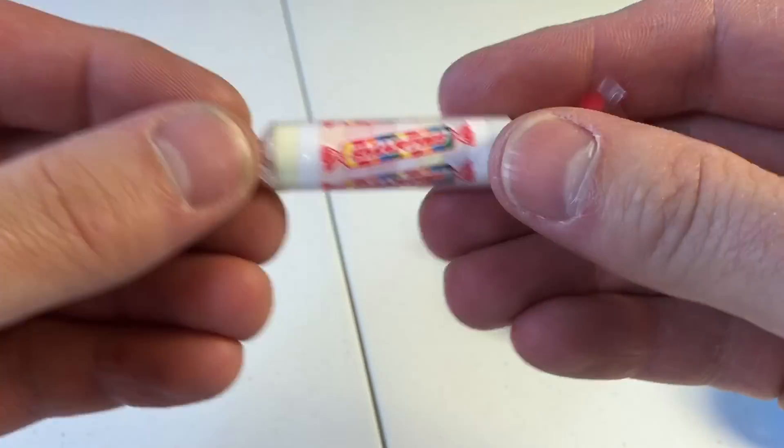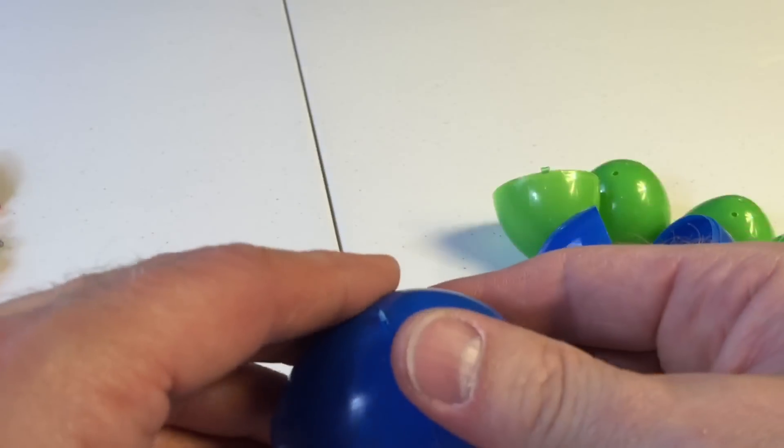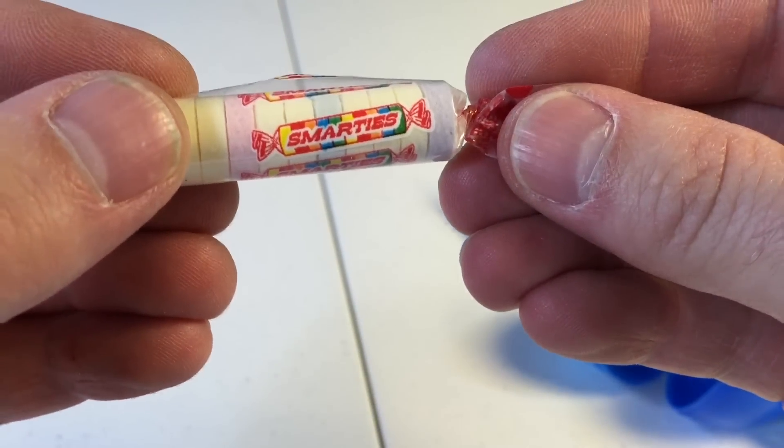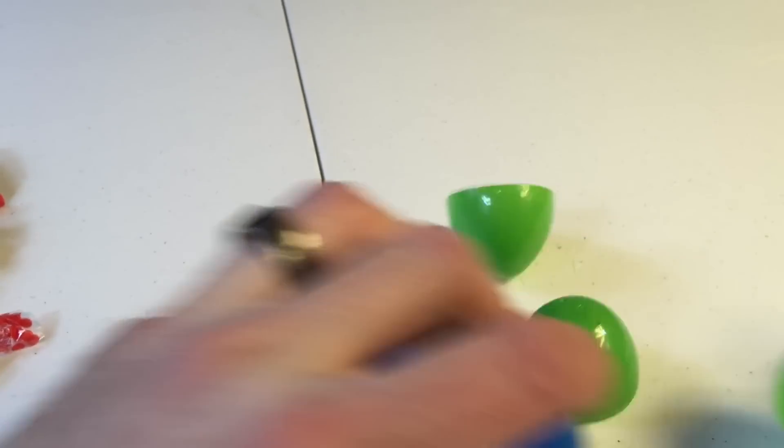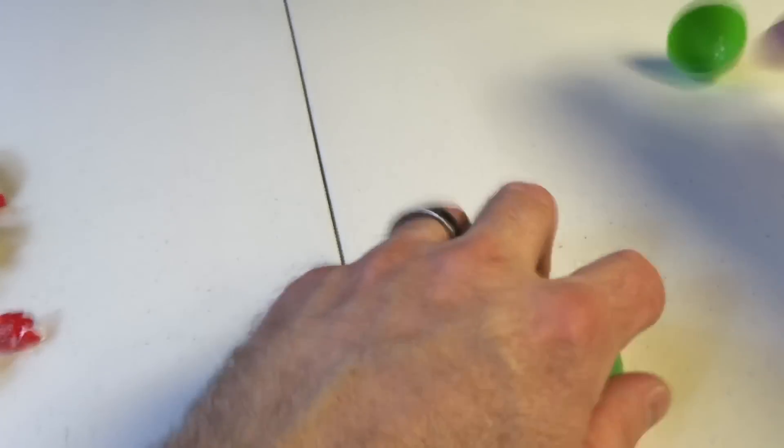Look. This treasure chest. Double bubble and smarties. I'm making the treasure chest.